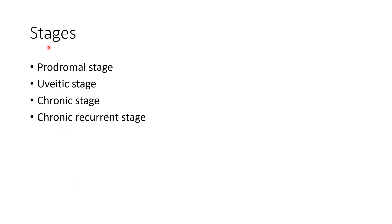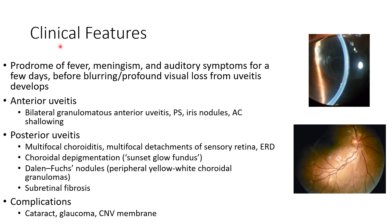Now let us discuss the stages of VKH disease. There are four stages: the prodromal stage, uveitic stage, chronic stage, and chronic recurrence stage. In the prodromal stage, there will be a prodrome of fever, meningismus, and auditory symptoms for a few days before blurring or profound visual loss from uveitis develops.